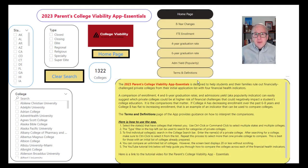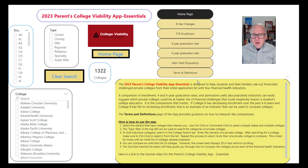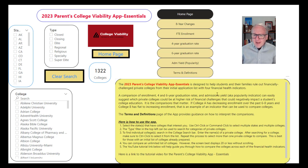Hi, this is Gary Stocker. This is a tutorial on using the 2023 Parents College Viability App, the Essentials version. The Parents College Viability App is designed to help students and their families rule out financially challenged private colleges from their initial application list with four financial indicators, which I'll talk about as I show you how to use the app.